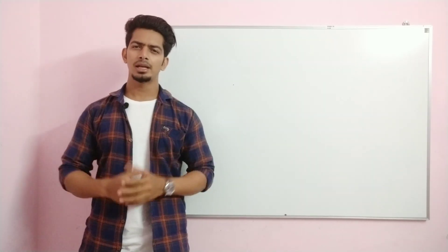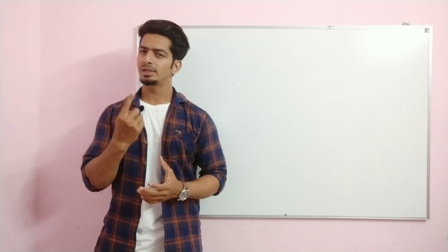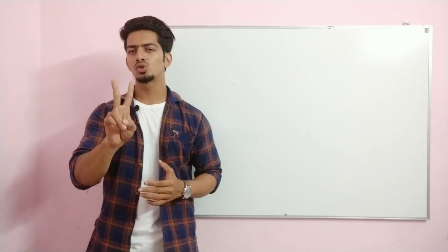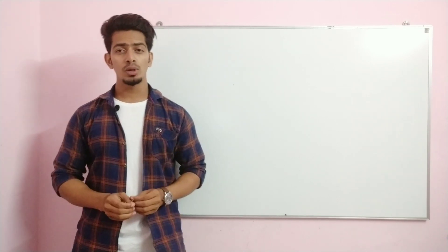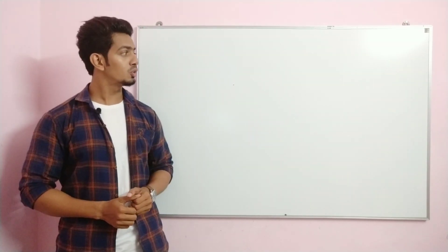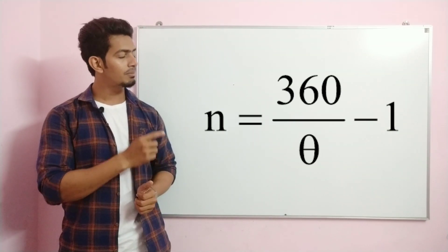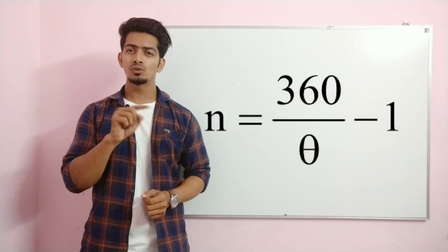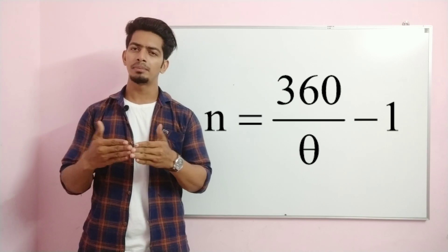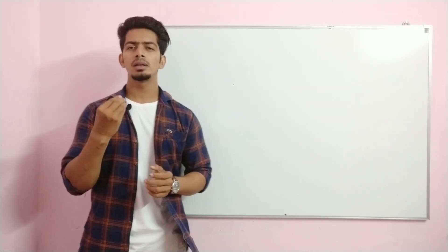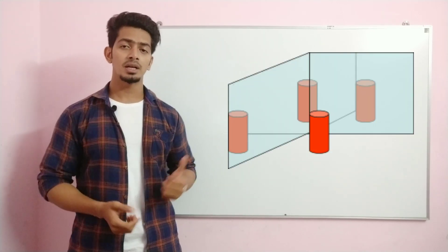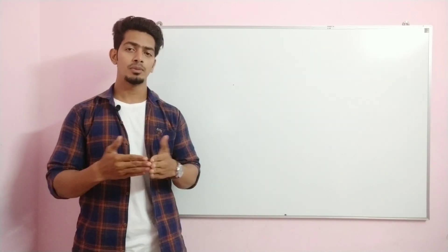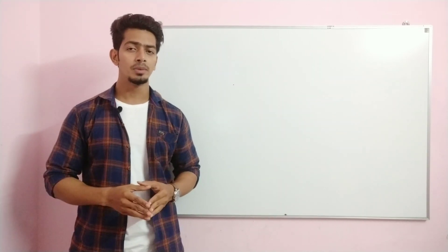If I have a plane mirror, the image will be single. Now the number of images can be increased if we have two plane mirrors. The formula is: n = 360 / θ − 1, where θ (or a in some textbooks) is the angle between the two plane mirrors. So n is the number of images and θ is the angle between them — the smaller the angle, the greater the number of images.